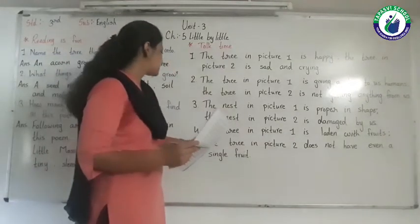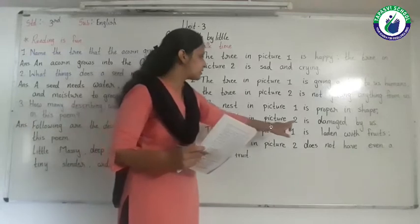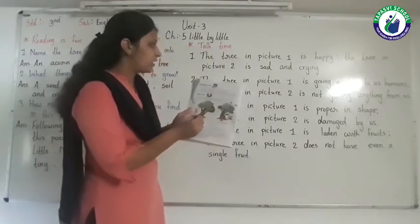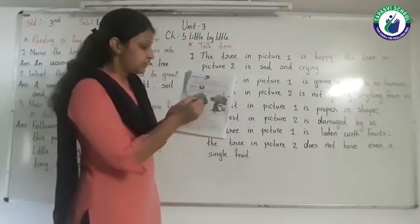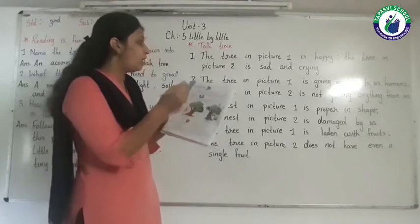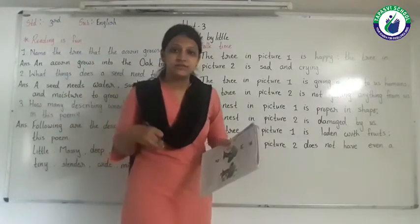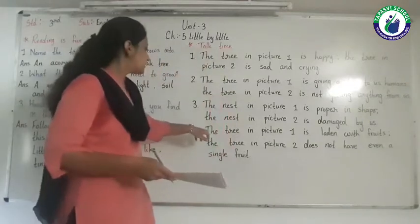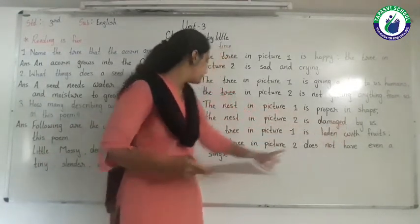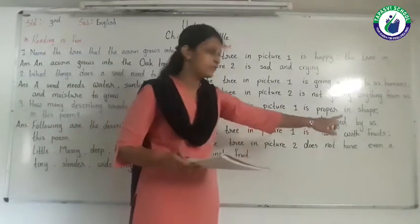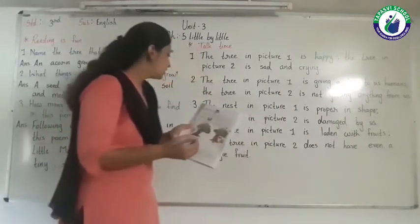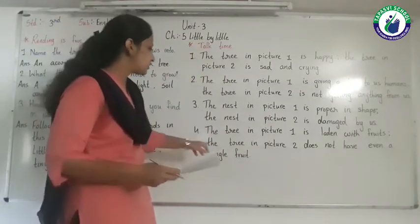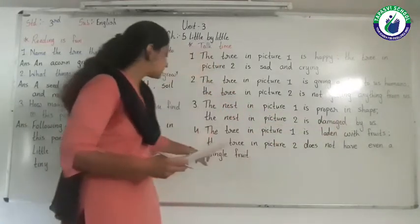Difference number four: the tree in picture one is laden with fruits - laden means filled up. The tree in picture one is full of fruits, vegetables, and medicines. The tree in picture two does not have even a single fruit.